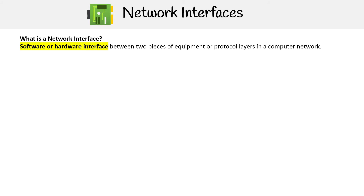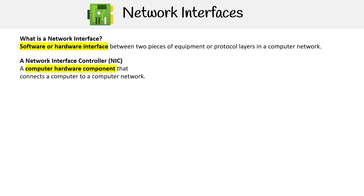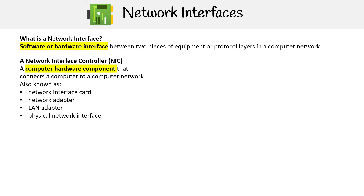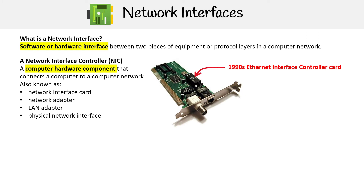Let's take a look at network interfaces, which are software or hardware interfaces between two pieces of equipment or protocol layers in a computer network. Network interface controllers, also known as NICs, are the actual piece of hardware that connects a computer to a network. They go by a bunch of different names such as network interface card, network adapter, LAN adapter, physical network interface, or even Ethernet interface controller card.